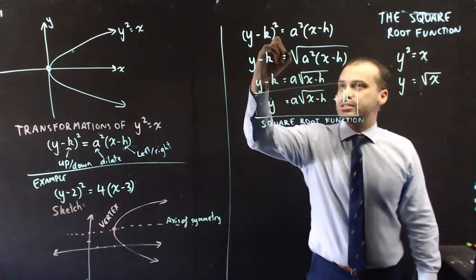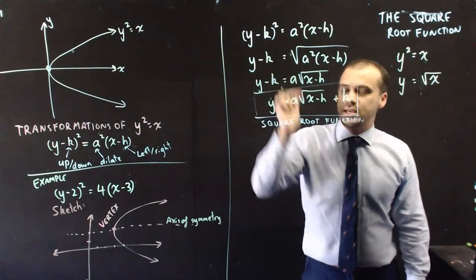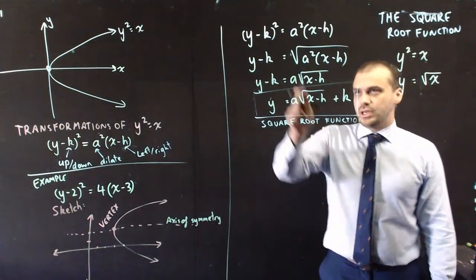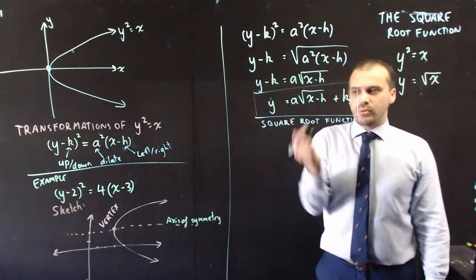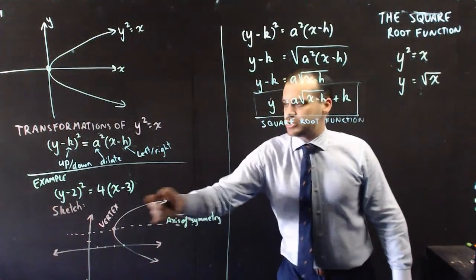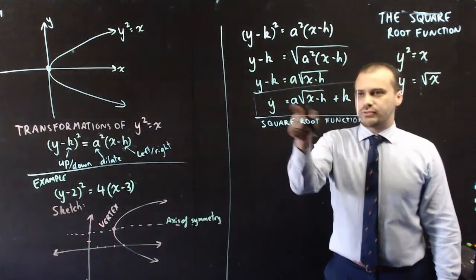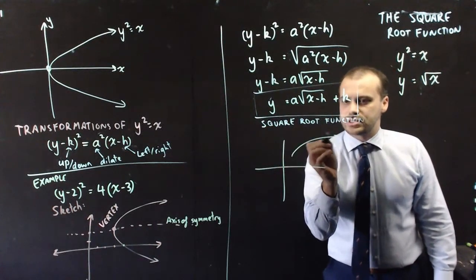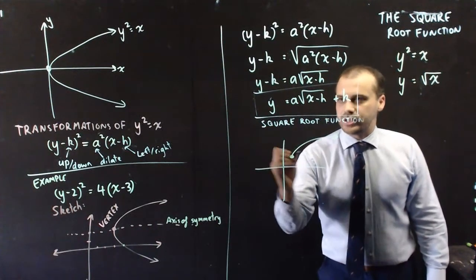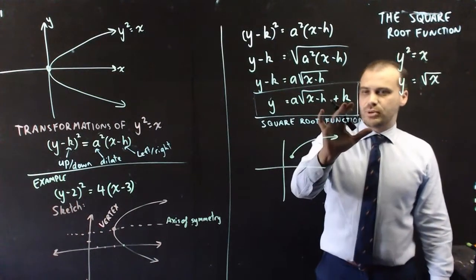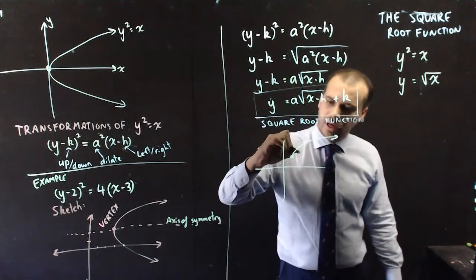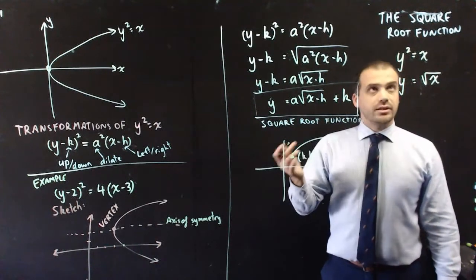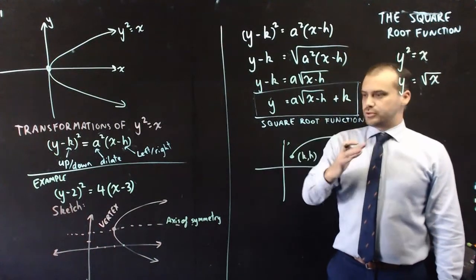Now, it's important to note that when I did this, I didn't put a plus-minus here. That's a choice I'm making so that this will be a function. If I put a plus-minus there, then I won't get a function. I'll get exactly this kind of image. But given that I've got a square root function, it's going to look more like this, where that value right there is my vertex. And it's given by the value k-h. Right there. All right. That is the square root function.